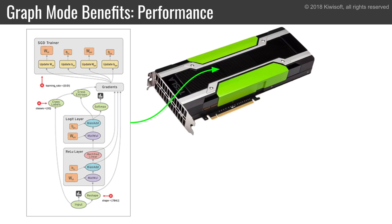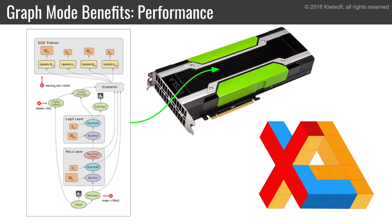The first is performance. If you place a set of operations directly on a GPU device, they will run there without all the back and forth with Python on the CPU. This can significantly boost performance, especially if you're dealing with deep models and small batch sizes. Also, once you have created a graph, it is possible to use a great feature of TensorFlow called XLA. XLA analyzes the graph and improves its performance, both in terms of execution speed and memory footprint. For example, it can fuse together groups of operations so that they can run faster on the device and use less memory.